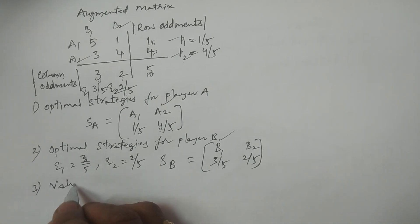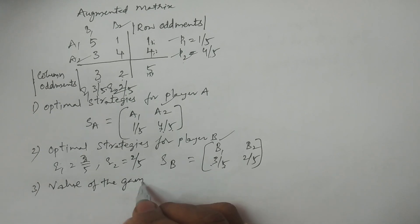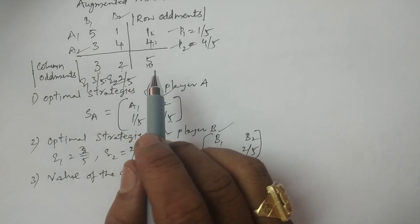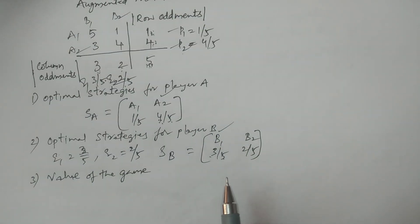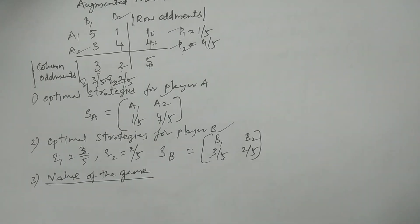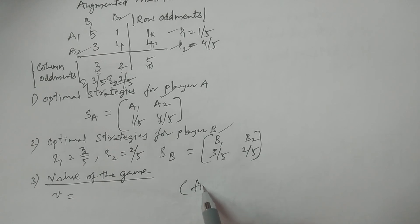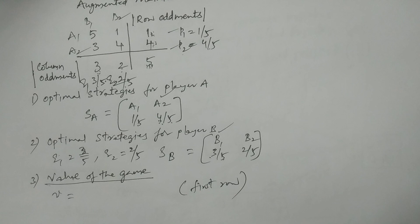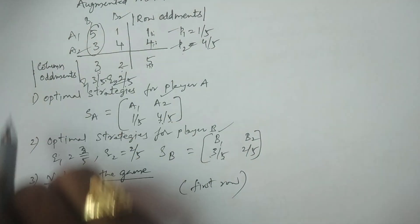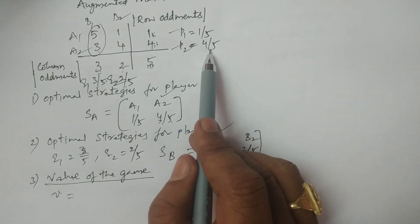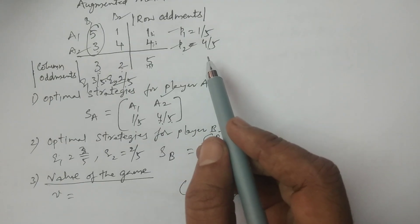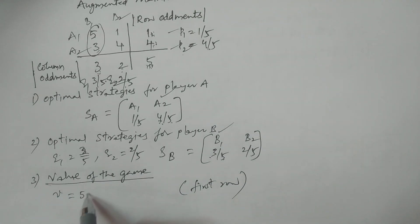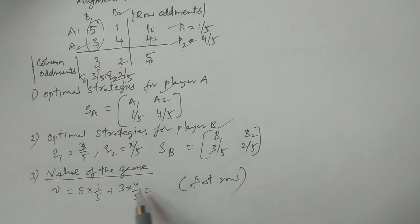Third point: value of the game. We calculate the expected value using any row or any column. Expectation of X = Σ x · P(x). Using Row 1: 5 × (1/5) + 3 × (4/5) = 1 + 12/5 = 17/5.